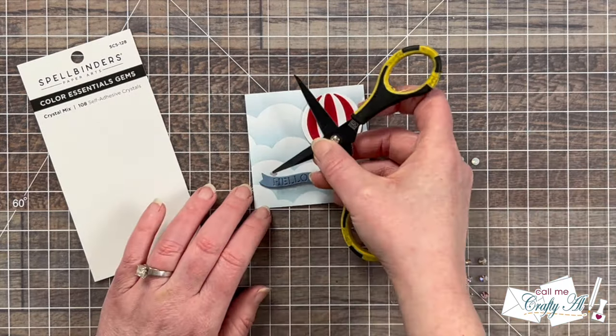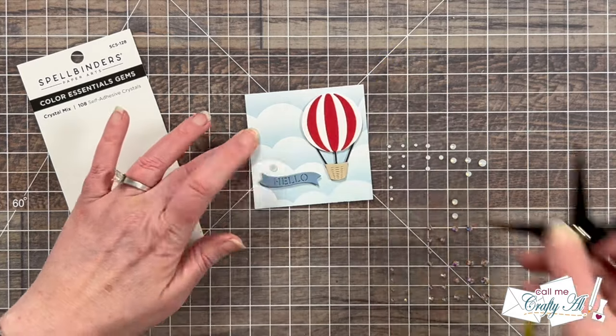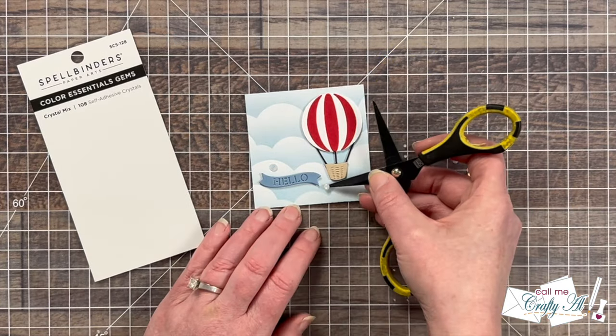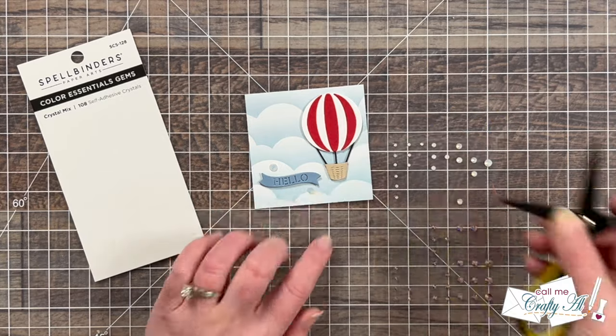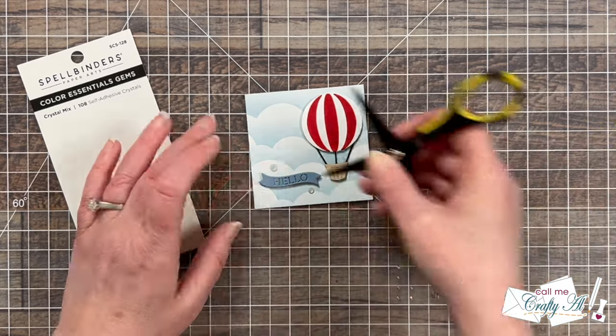To finish off today's square I wanted to add a little sparkle so I brought in some Spellbinders color essential gems in the crystal mix and I added a trio around that sentiment banner.